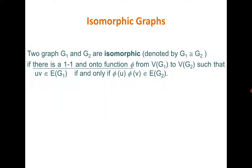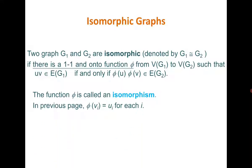We say that G1 and G2 are isomorphic if there is a one-to-one and onto function from the vertex set of G1 to the vertex set of G2, such that if uv is an edge in G1, then φ(u) and φ(v) is an edge in G2. Recalling the previous example, if we define φ(vi) = ui, it can be easily verified that it is a bijection, and since there exists a bijection, the two graphs are isomorphic.